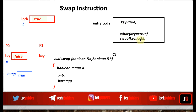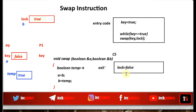At any time when lock is false, that false value will be transferred to key. When key becomes false, the process can break the while loop and enter the critical section by setting lock to true. And when a process exits the critical section, it sets lock equal to false so that any other process executing the swap function will receive a false value in its key and can enter the critical section.